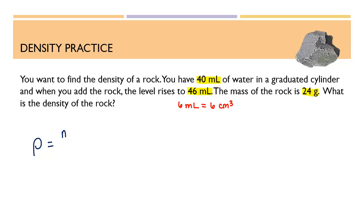So I'll set up our equation. Density is equal to mass over volume. The mass is 24 grams, and the volume is 6 cubic centimeters. This equals 4 grams per cubic centimeter.